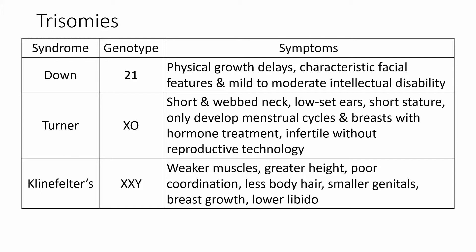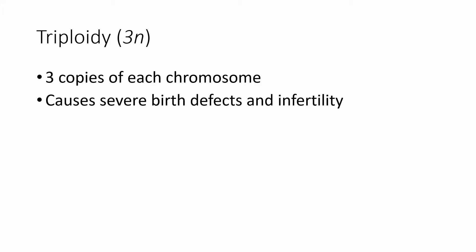Turner's syndrome is not a trisomy but results from having one less chromosome — 45 instead of 46. People with Turner's syndrome are physiologically female but may not easily reproduce without medical assistance and may have trouble developing secondary sex characteristics. Klinefelter's syndrome is a trisomy where an individual gets two X chromosomes instead of one X with their Y — these people are physically male but will have some physiological differences post-puberty due to the extra X chromosome. Triploidy — three copies of each chromosome — is not known to survive to birth in humans due to severe birth defects.